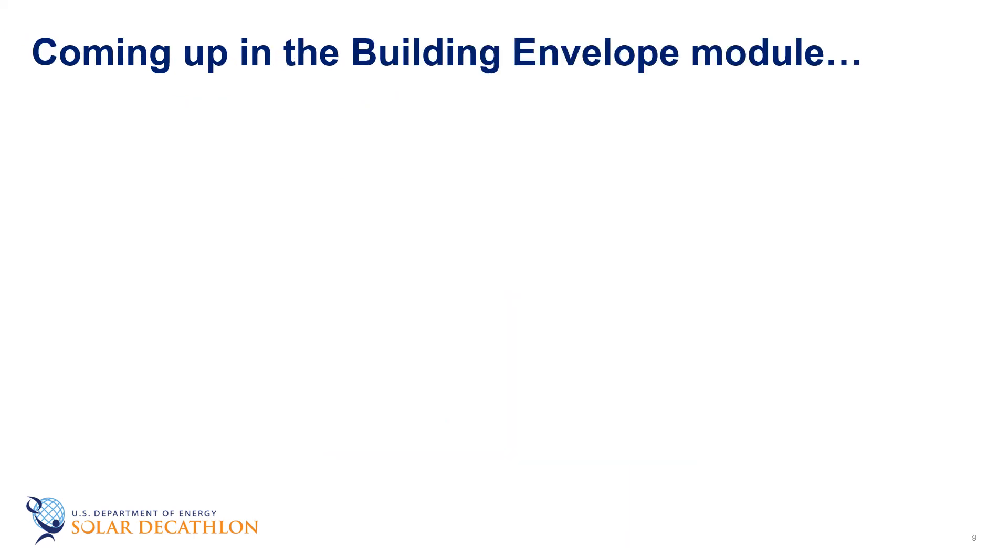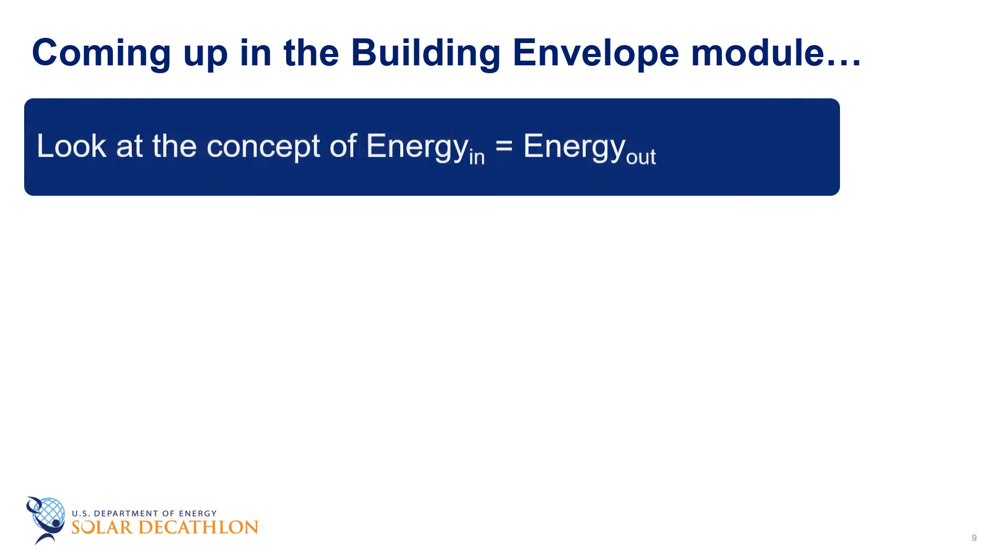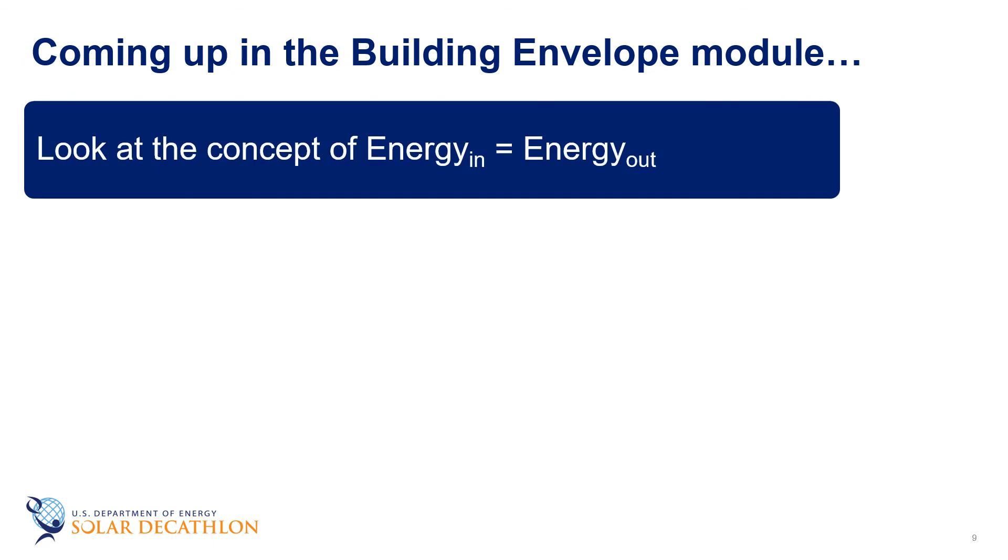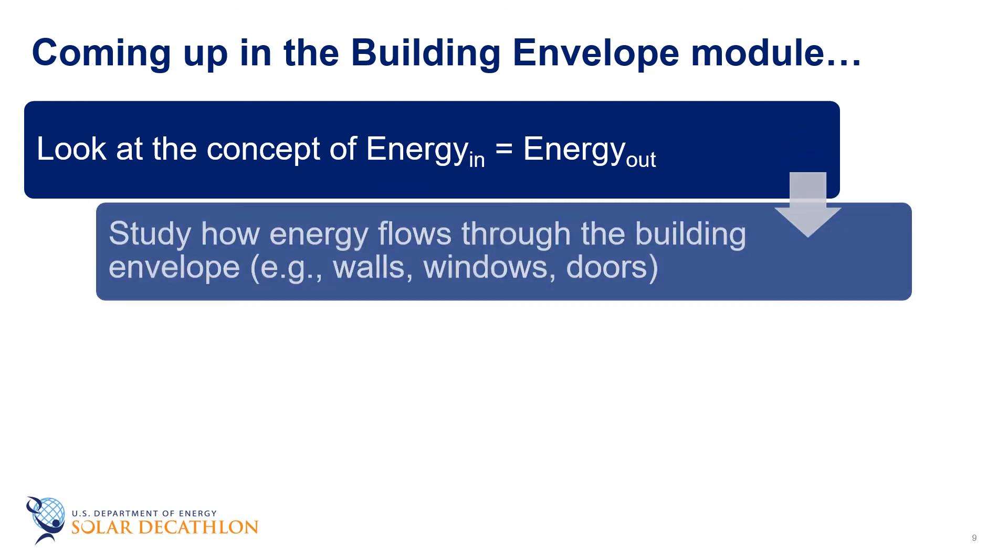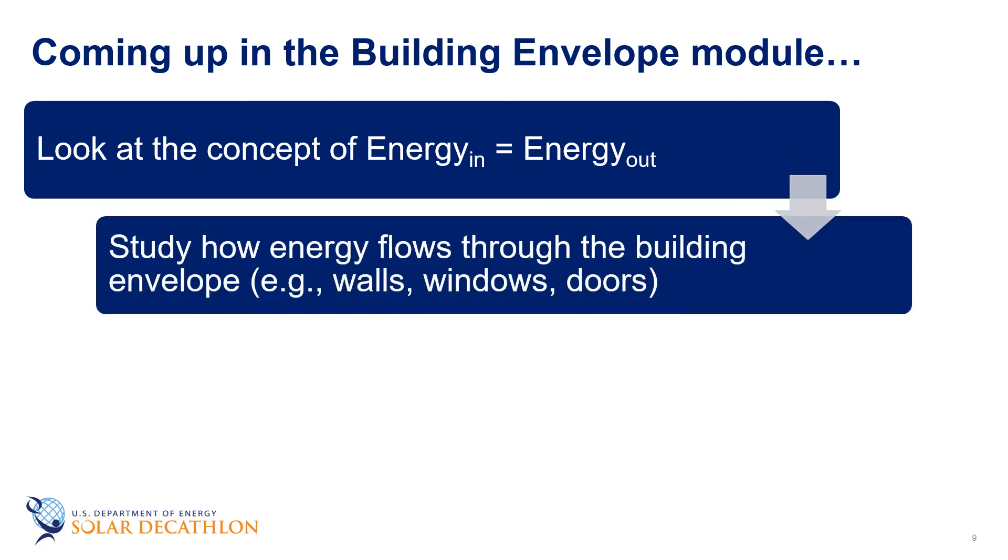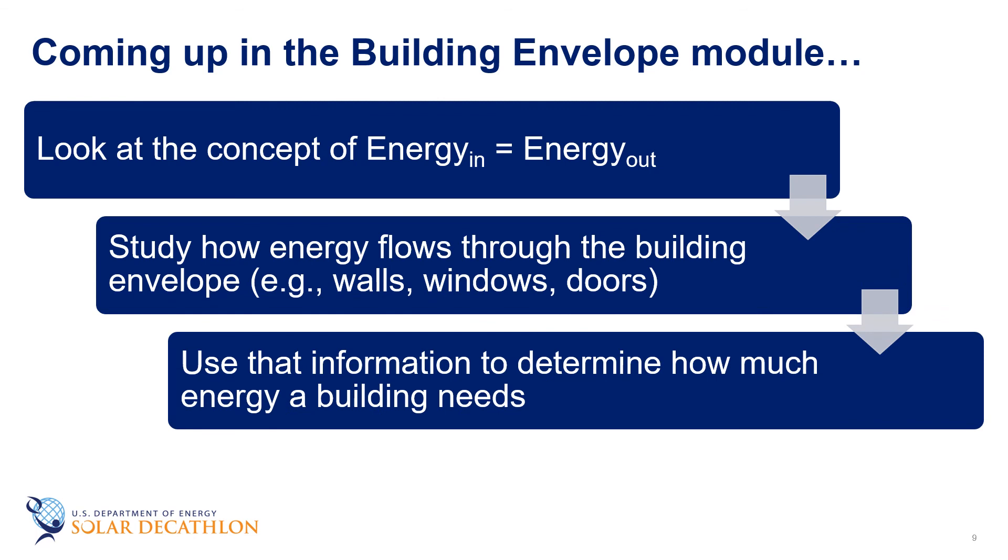In the next several episodes, we're going to be looking at this concept of measuring the energy going in and it equaling the energy leaving the house. We're going to start studying how energy flows through walls, windows, and doors, and how we can use that information to determine how much energy a house needs. That energy escaping is balanced with the energy that we need to generate, whether that energy comes from photovoltaic panels, electricity from the grid, or another fuel sources such as natural gas. That's really important to think about, because if I can reduce the amount of energy escaping, then I don't have to bring in as much energy from another source and pay for that energy.